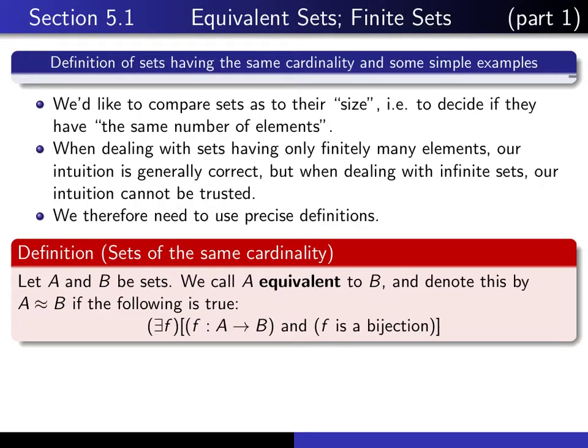And so here is the fundamental definition which tells us when we can say that sets have the same cardinality. If we give ourselves two sets A and B, we say that they're equivalent, A is equivalent to B, and we write this using this notation if the following is true: there exists an f such that f is a function from A to B and it's a bijection. We say that A is equivalent to B if there exists a bijection from A to B.